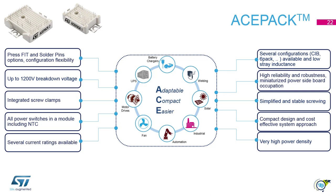You can choose between two pin connector types: press fit or solder pin. The module features a breakdown voltage of 650 V or 1200 V, and hosts all power switches in one package plus the NTC. Several current ratings and configurations are available. Due to its fixed arrangement of the interior, we achieve optimized stray inductance and high reliability and robustness. Simple mounting optimizes system assembly cost and effort.